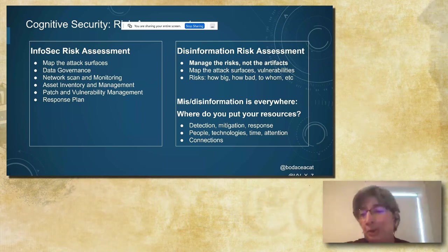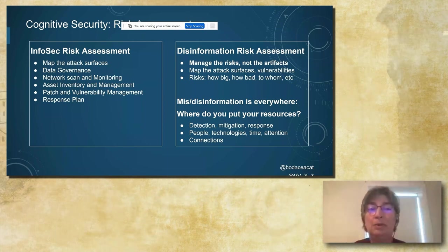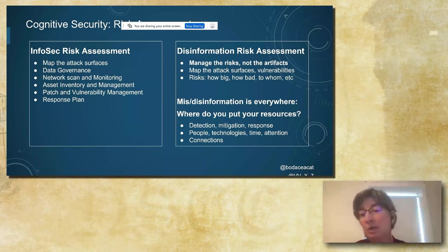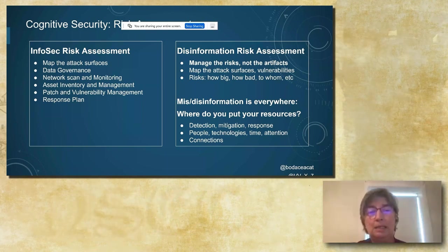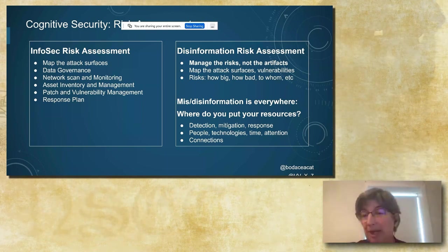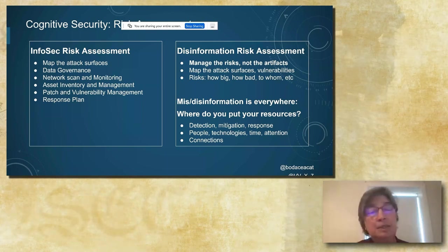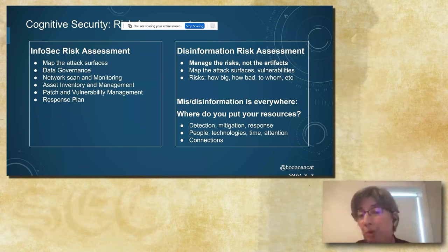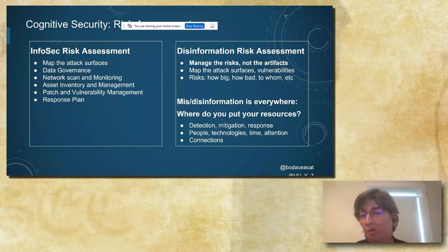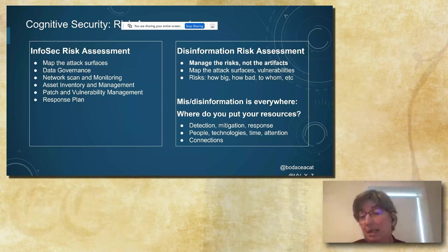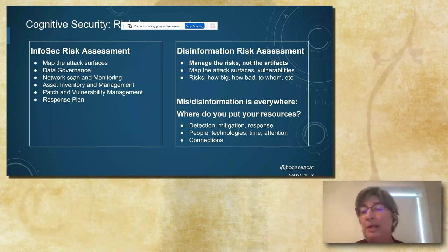With infosec risk assessment, you're looking at things like attack surfaces, doing patches, vulns, response plans — works the same in disinformation. Part of the problem is this stuff is everywhere. Everything's on fire. If everything is on fire, where do you put your effort? You have a set of resources you can use. How do you understand what the problem is? What are the attack surfaces, the vulns, how do you patch?